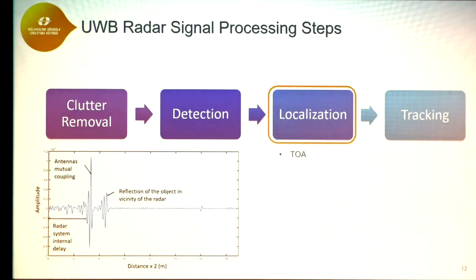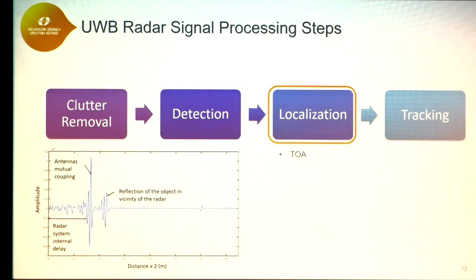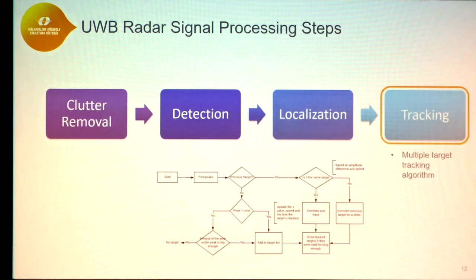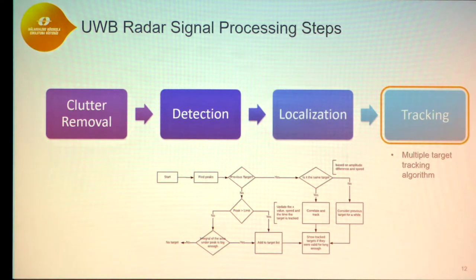When we detect the target, localization is quite easy because the raw data signal represents the time of arrival of the signal. For example, in the raw data signal, the antenna material coupling can be identified, and the distance between that and the target peak represents the distance to the target multiplied by 2. The tracking algorithm we developed is based on the speed, amplitude, and the time that the target was represented in the radar return signal.